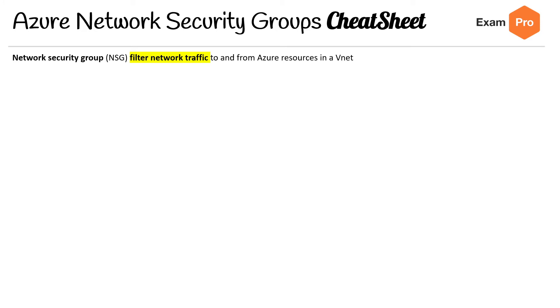Hey, this is Andrew Brown from Exam Pro, and we're looking at the Azure Network Security Group cheat sheet. NSGs filter network traffic to and from Azure resources within a VNet.